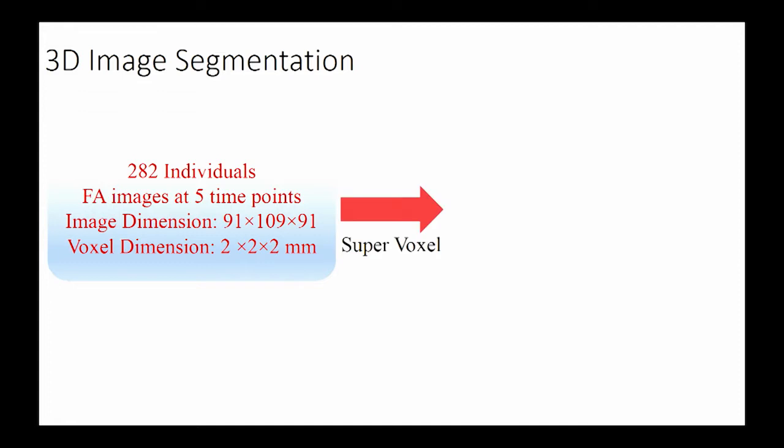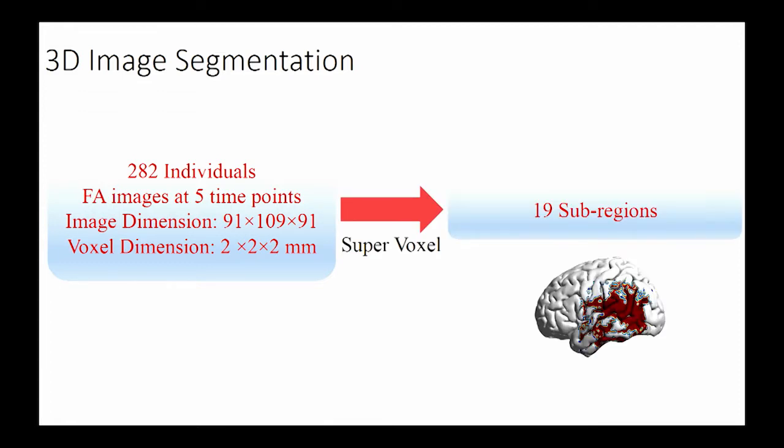After imputation, the image is still too big, about 91 times 109 times 91. That's a lot of voxels. It's very naive to run the analysis on all the voxels because it's very time consuming and the complexity of the network is kind of intractable. So we use super voxels as a tool to segment the whole brain image into 19 different sub-regions.